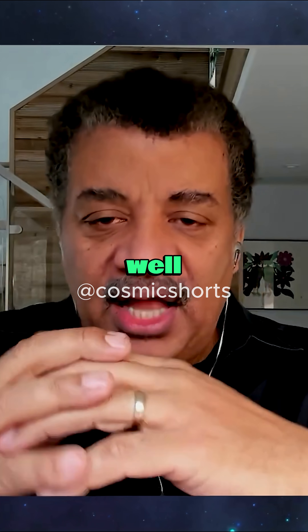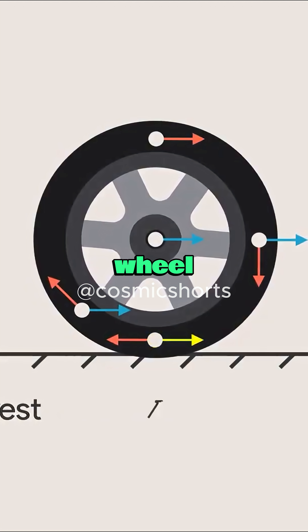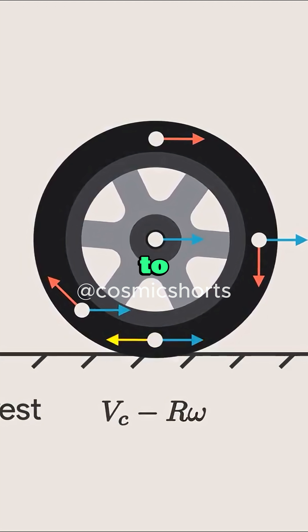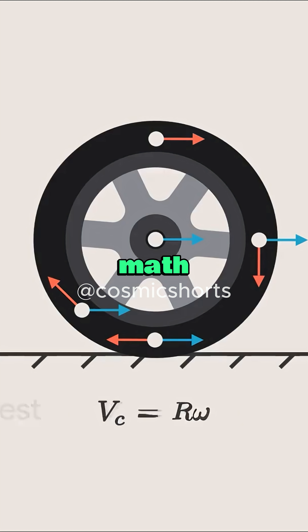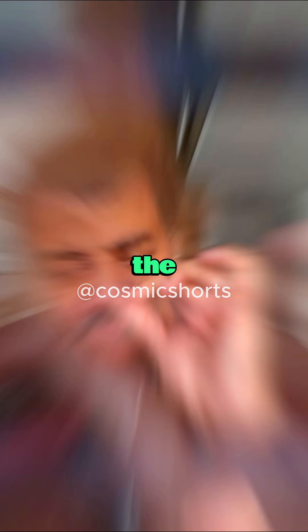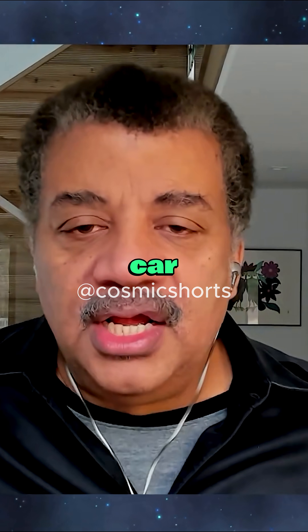The top of the wheel well is going forward at your speedometer speed. The top of the wheel is going faster than that to come around to the bottom so that it's not moving at all. And if you run the math on that, you get zero at the bottom, the speed of the car in the middle of the wheel, and twice the speed of the car at the top of the wheel.